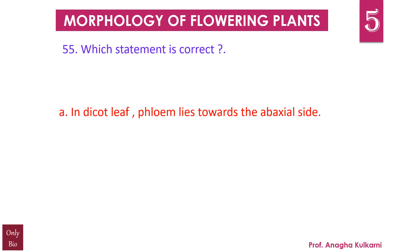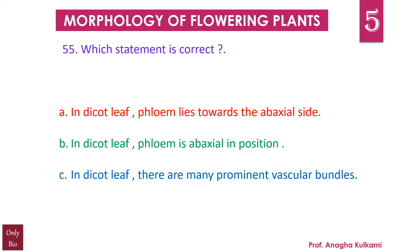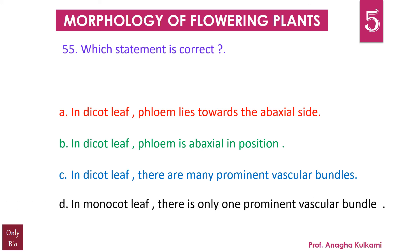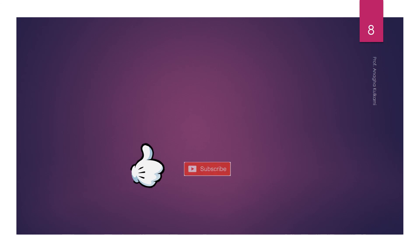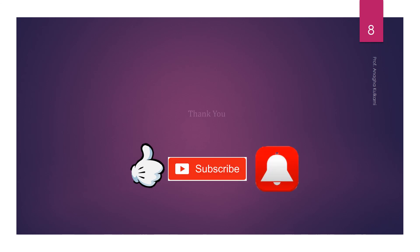Question number 55: Which statement is correct? a) In dicot leaf, phloem lies towards abaxial site; b) In dicot leaf, phloem is abaxial in position; c) In dicot leaf, there are many prominent vascular bundles; d) In monocot leaf, there is only one prominent vascular bundle. The correct statement is a) — in dicot leaf, phloem lies towards the abaxial site.